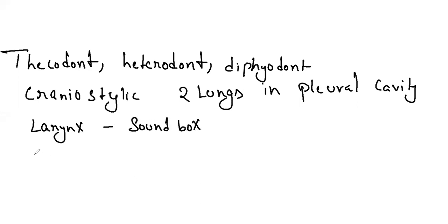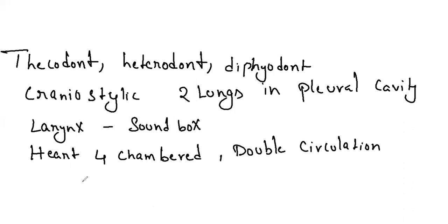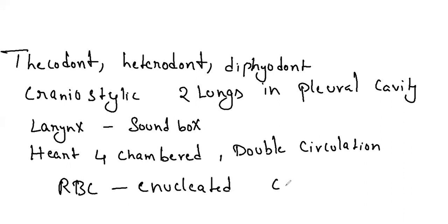Heart is four-chambered with double circulation. Only the left aortic arch is systemic. RBC is small, circular, and enucleated — except in camel and llama, where RBC is nucleated.